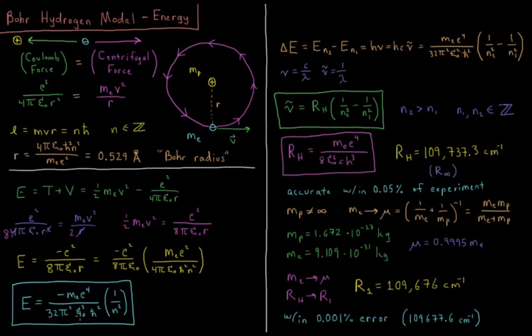That is equal to this pre-factor here, mass of electron times e to the fourth over 32 pi squared epsilon naught squared h bar squared, then you'll have 1 over n2 squared and a negative 1 over n1 squared. You have this quantity in parentheses here, 1 over n2 squared minus 1 over n1 squared. If you'll notice, this looks suspiciously similar to our formula from a few videos ago of the Rydberg formula. There, nu bar was equal to this constant, the Rydberg constant, times 1 over n2 squared minus 1 over n1 squared, where n2 was some number which was greater than n1, but both were integers and both were greater than 0.